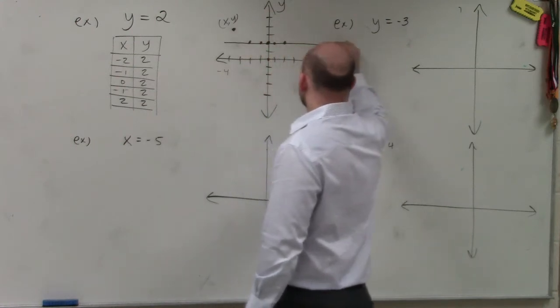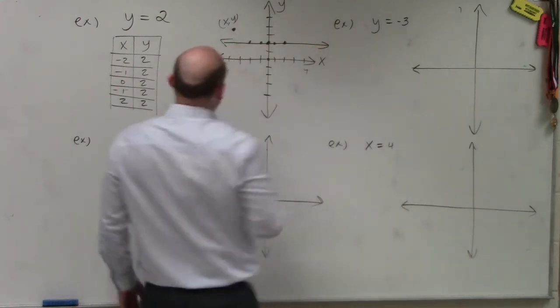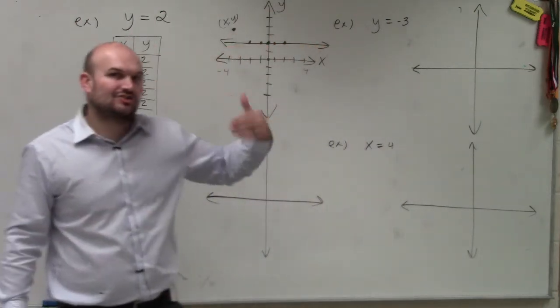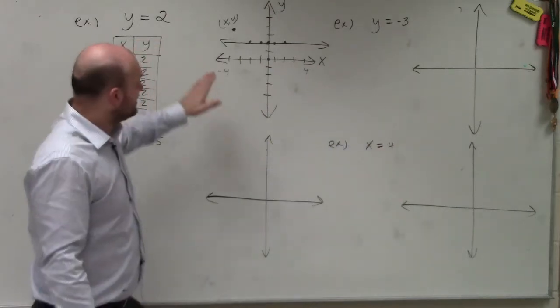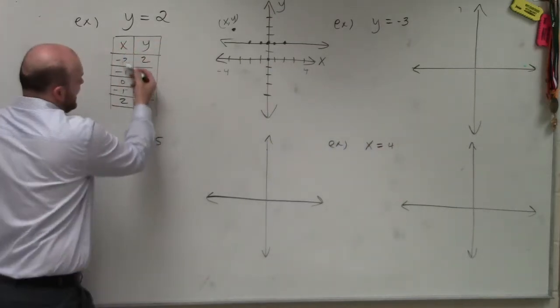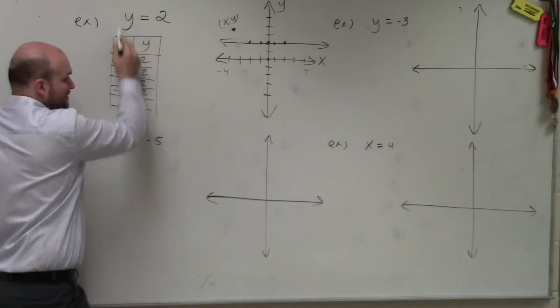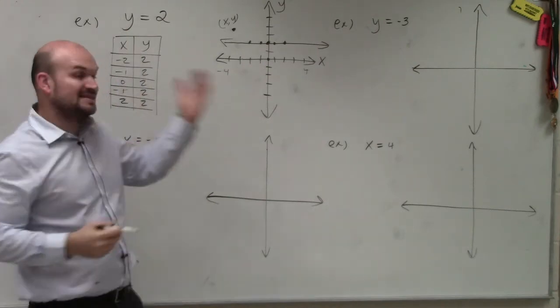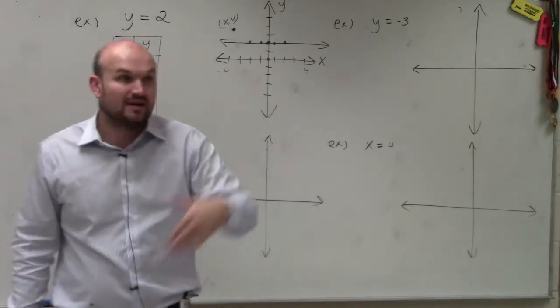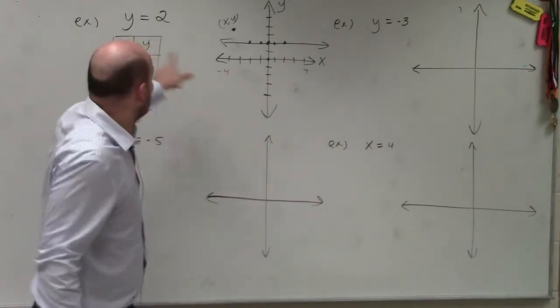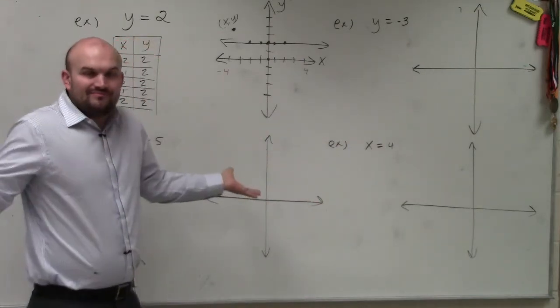So if I connect those, what you can do is understand that y equals 2, that just creates a horizontal line. Because it doesn't matter what x value I choose, I could go up to negative 4, down to negative 4, up to positive 4, to negative 16, to 100. Y is always equal to 2. So that's it. Done.